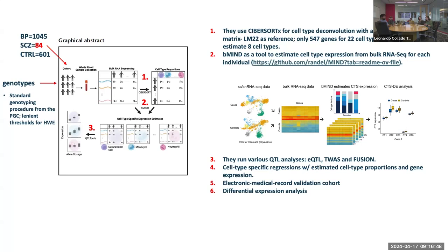They include 547 genes for 22 cell types but estimate only eight. I have some experience with CyberSort — I use CyberSort — though I'm not sure how I feel about it. I have to read your paper to see — congrats by the way on your paper — I need to read it to see how CyberSort performs.